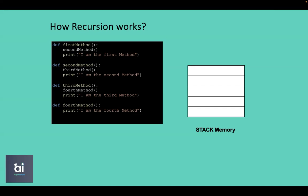Let's see what happens in stack memory when we call the first method. Stack memory is maintained by the system for method invocation and works on the LIFO method — last in, first out. The push method is used to insert into a stack and a pop method is used for removal. We'll discuss stack in detail in the stack section.